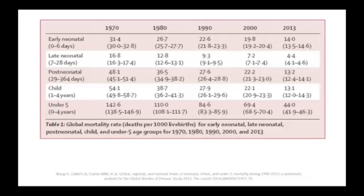In terms of the background, for those familiar with child survival globally and those who are not - for the last 40 odd years there has been significant improvement in child survival. If you look at under-fives, from 1970 to 2013 there's been almost a fourfold reduction in the under-five mortality rate per thousand live births. However, since our interest is in newborns, if you look at early neonatal (0 to 6 days) and 7 to 28 days, there's been much less improvement in neonatal mortality, particularly for those within the first week of life.